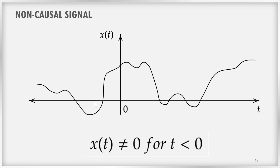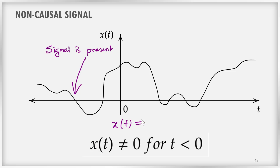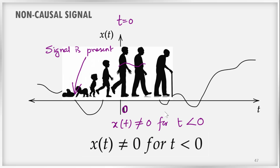Non-causal signals are opposite to causal signals. The signal is present in the negative time axis as well, so mathematically x(t) ≠ 0 for t less than 0. The signal started somewhere in the past and is going on through the present into the future. For an analogy, consider a student studying engineering — if the second year of study is taken as t=0, then he was present on earth before t=0. This is an analogy corresponding to the non-causal signal.